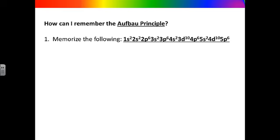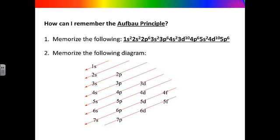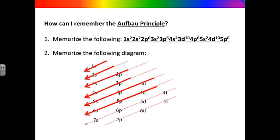This will help you get the electron configurations through the element xenon. Another way is to memorize the diagonal rule diagram. By following the arrows, you will be able to write the correct electron configuration. Always start at the top with 1s, then 2s, 2p 3s, 3p 4s, 3d 4p 5s, 4d 5p 6s, 4f 5d.